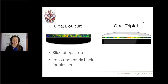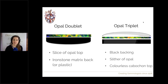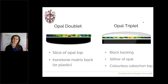Opal triplets are made slightly differently. They use often just a very thin sliver of opal — much less than a millimetre. Behind this is a black backing, originally onyx but now often just plastic, and on top is a colourless cabochon, often nowadays plastic but previously quartz. The black background enhances the play of colour by contrast, and the colourless cabochon top protects the thin opal layer from damage while also offering some additional enhancement.